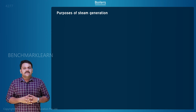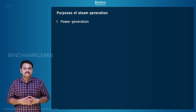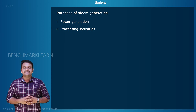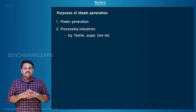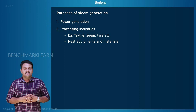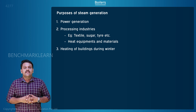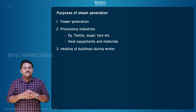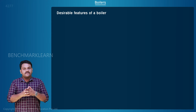The steam is generated for the following purposes: for power generation in thermal power plants; for processing industries such as textile industry, sugar factory, tire factory, etc., where its major use is to heat equipment and materials; and for heating of buildings during winter by circulating steam through them.